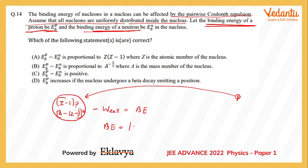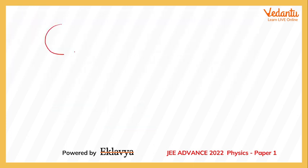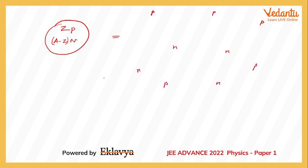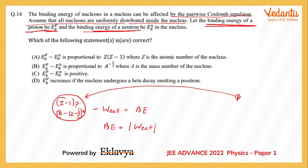In other words, the binding energy will be the modulus of this external work. So that would mean the binding energy of the Z-th proton. Mind you, it is not the binding energy of the entire nucleus. Binding energy is the energy required to be given to the proton to remove it from the nucleus and move it to infinity.